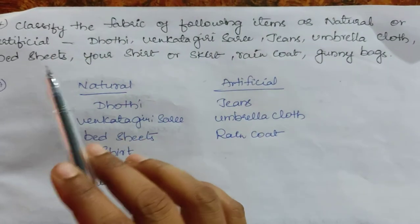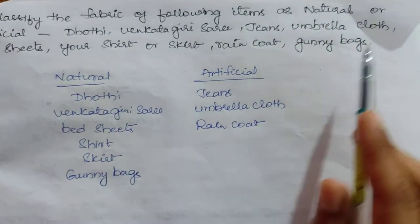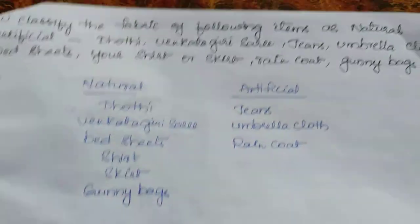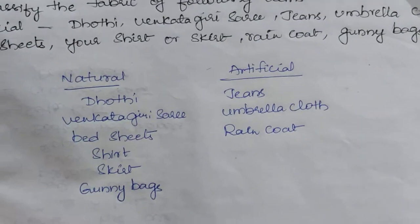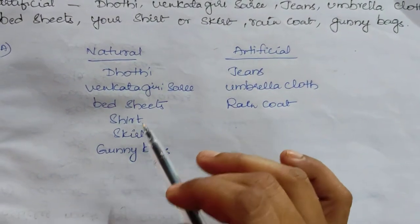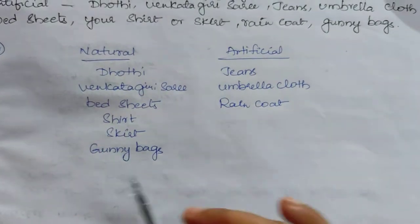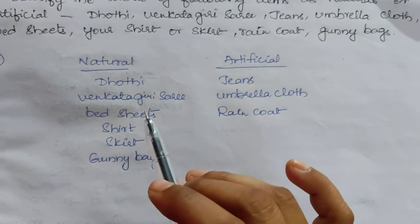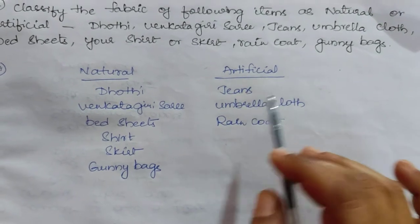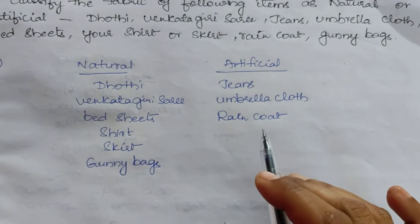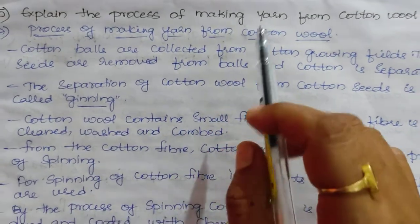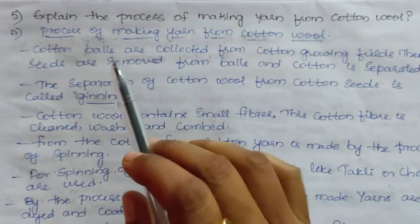Fourth question: classify the following fabric items as natural or artificial. The natural fabrics are: dhoti, saree, bed sheets, shirt, skirt, and gunny bags — these are obtained from plants. The artificial or man-made fabrics are: jeans, umbrella cloth, and raincoat.